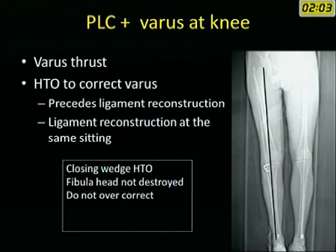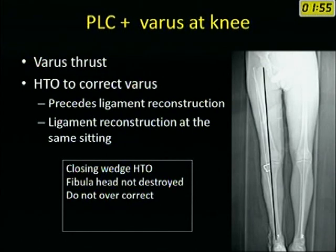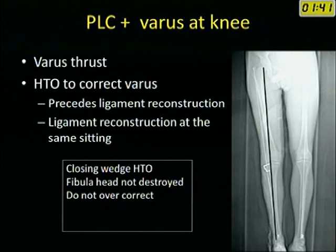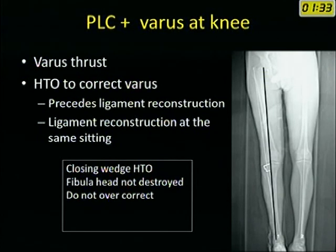In long-standing cases of PCL with posterolateral corner injury, there is a varus thrust. It is important to recognize this deformity and perform a high tibial osteotomy to correct the varus. This correction can be done before the ligament reconstruction or at the same setting. There are two options: open wedge or closed wedge. For closed wedge osteotomy, do not destroy the fibular head — perform osteotomy of the fibular shaft. And correct only to a neutral position, not to valgus as in osteoarthritis correction.